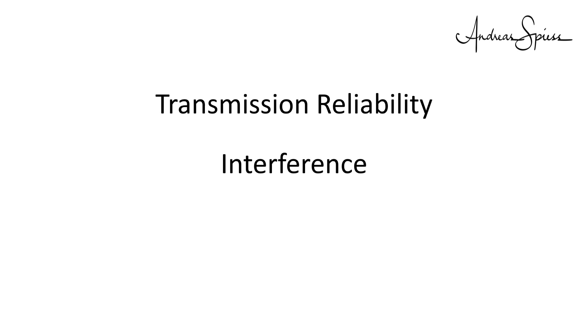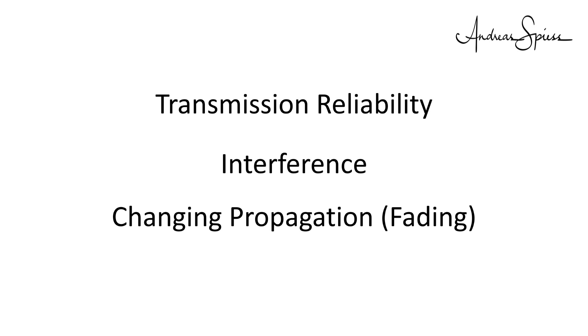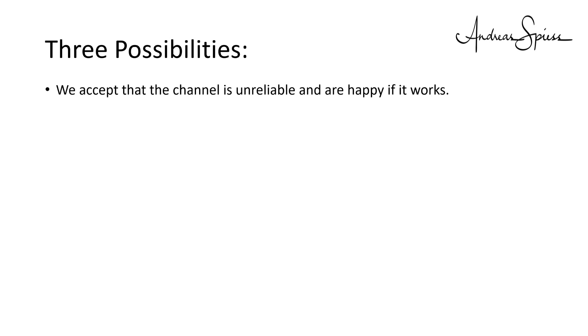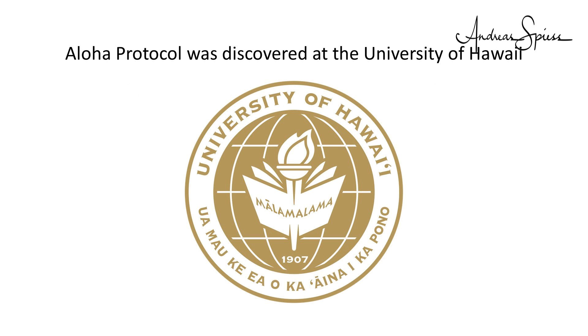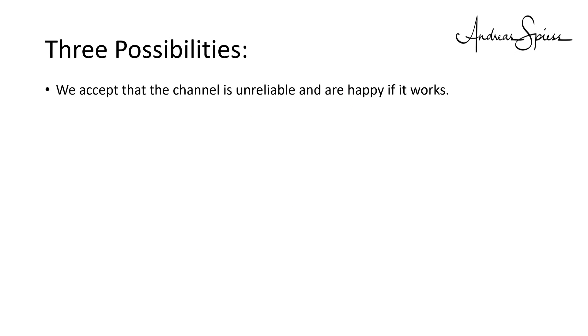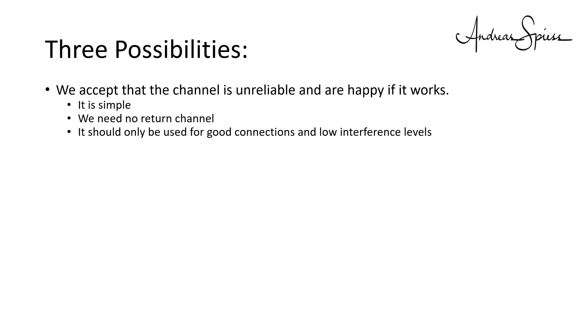The last topic is transmission reliability. This is a vast area because radio communications are not as reliable as wired connections, due to interference from other users of the same frequencies and changing propagation if the devices move around. We have three possibilities to deal with these facts. First, we accept that the channel is unreliable and are happy if it works — this is the principle of the ALOHA protocols as used in LoRaWAN. But it can only be used for data which is not very important or does not change a lot over time. Its significant advantage is that it is simple and we need no return channel, but it should only be used for good connections and low interference levels.